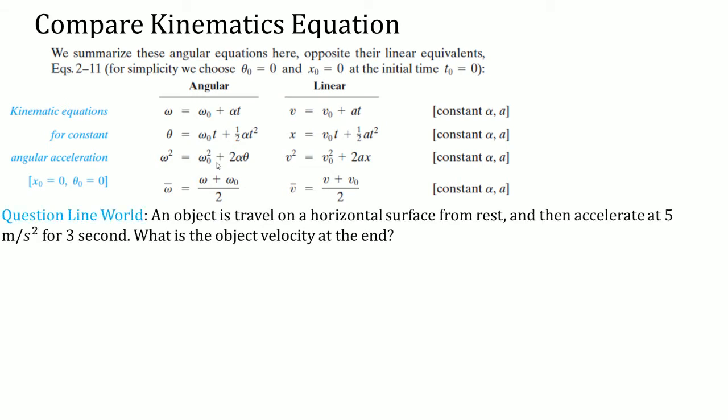An object travels on a horizontal surface from rest and then accelerates at 5 meters per second squared for 3 seconds. What is the object's velocity at the end? We saw that we can use just that equation. Velocity equals starting velocity plus acceleration times time. Plug in your acceleration, plug in your time. Your starting velocity was zero because it says from rest, you got 15 meters per second.